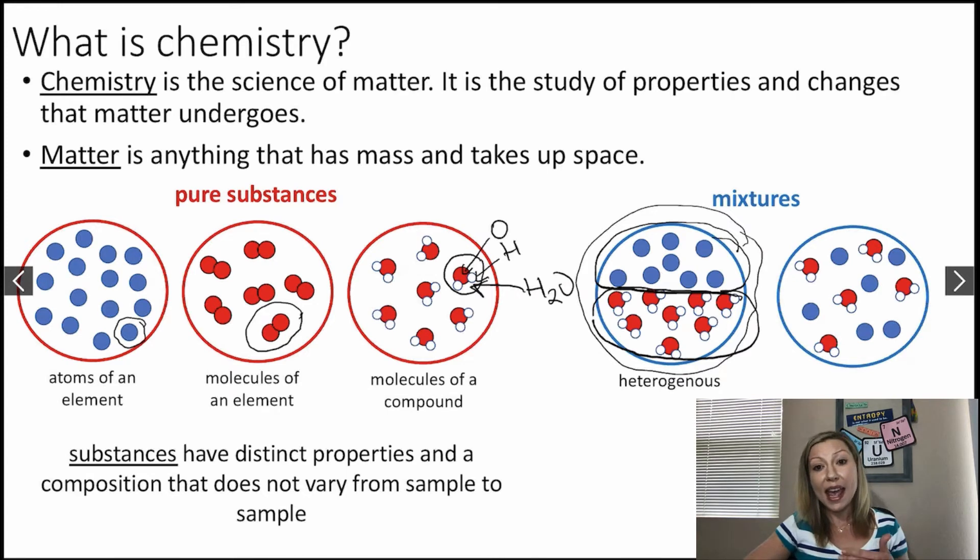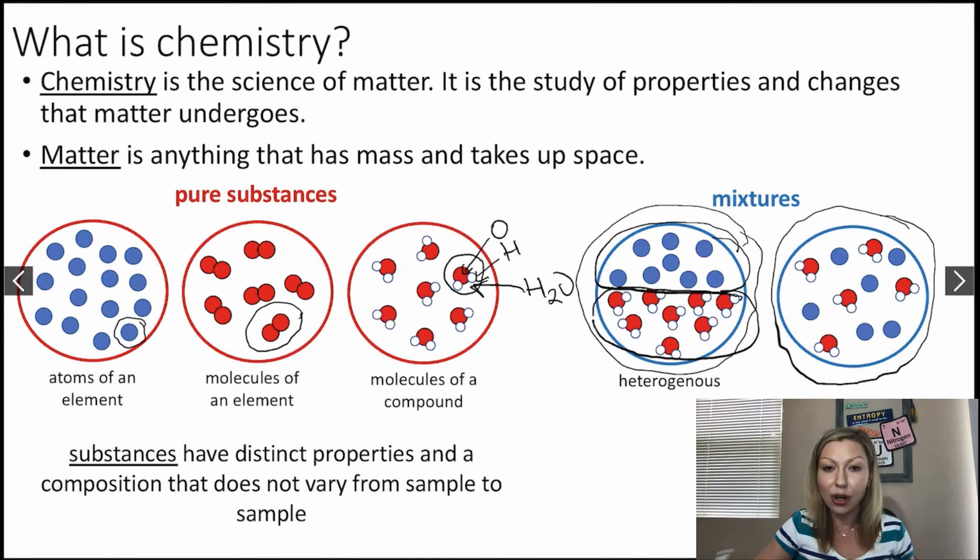So we are going to call mixtures like this heterogeneous. Okay, and if the composition is the same, so you have randomly mixed together water molecules with the atoms of an element, you are going to get a so-called homogeneous mixture. Okay, so this is the classification of matter based on its composition.